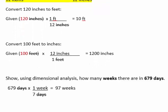Here's another basic example. Determine the number of weeks in 679 days. We identify the given number and unit as 679 days. The conversion factor we're going to use is 1 week over 7 days. The days cancel out and the math that remains is 679 divided by 7, which is 97 weeks.